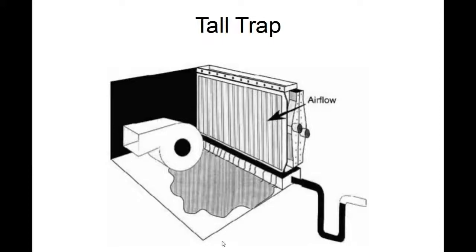Tall trap. If the trap is too deep or too tall, as illustrated here, there's not enough water pressure and weight of the water to force this column of water up through this trap that is too tall. Then what happens is it basically becomes a backed up system and the water instead of getting sucked and blown through the blower housing will overflow into the drain pan and into the air handler itself.